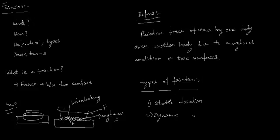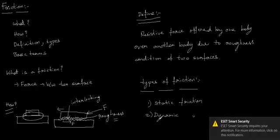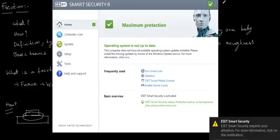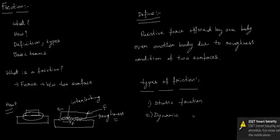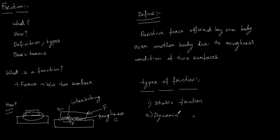In the name itself — static means the body is under a stationary condition and dynamic means the body is under a motion condition. The friction experienced by a body under a stationary condition is called static friction, and the friction experienced by a body under a dynamic — that means motion — condition is called dynamic friction.